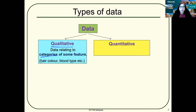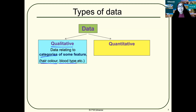For example, hair color — you could have black hair, brown hair, or golden hair. Another good example is blood type: you could have A type, B type, AB type, or the donor O type. These are qualitative data.